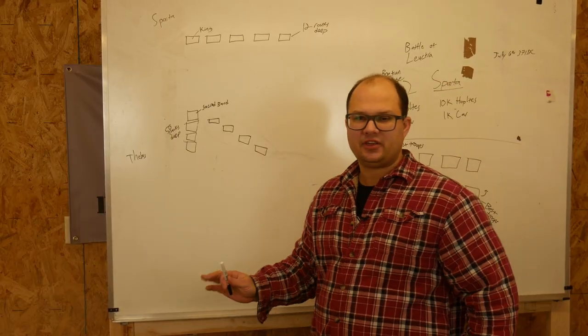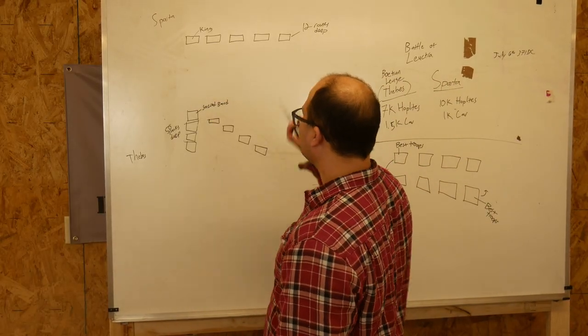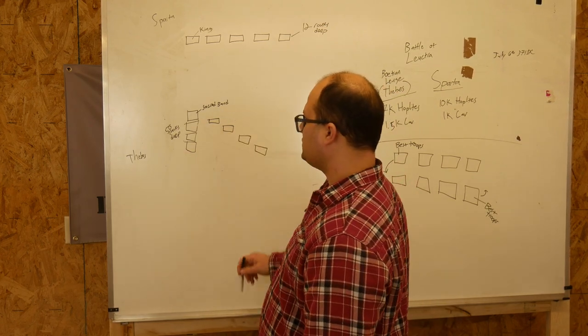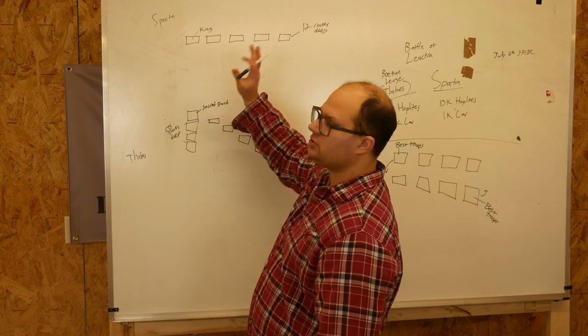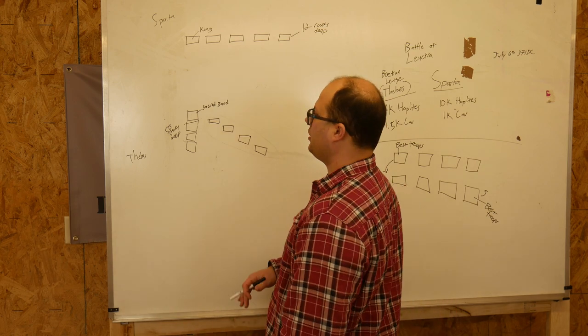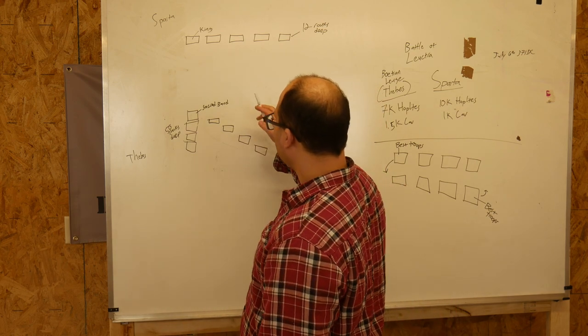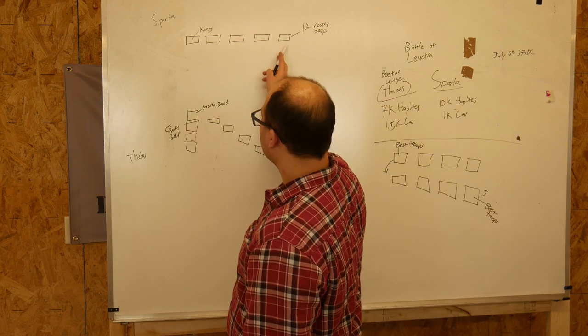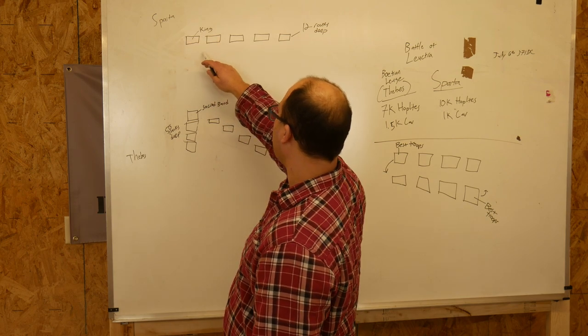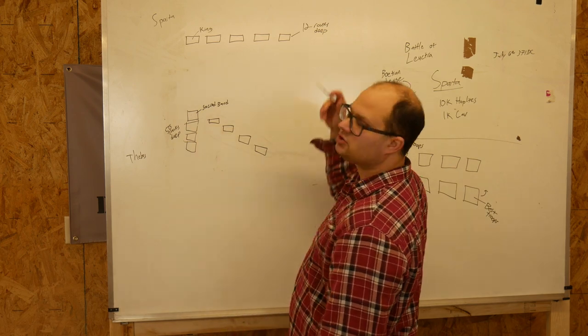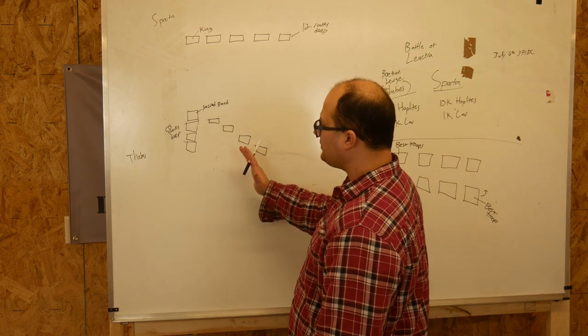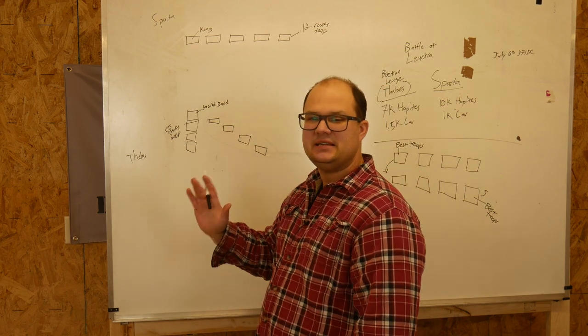So what you have here is you have Sparta lines up with their 10,000 hoplites on this side. Thebes lines up with their 7,000 hoplites on this side. The cavalry come out and do a little skirmish, but it doesn't matter, it's not important to the outcome of the battle, and we don't really care about it for our purposes. So as the infantry come out, the Spartans line up like normal. They anchor their king and their best guys on the right-hand side, they have the rest of their troops lined up, and they're about 12 ranks deep, give or take. On the opposite side, Thebes lines up a little bit differently.